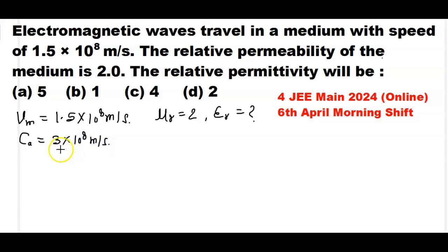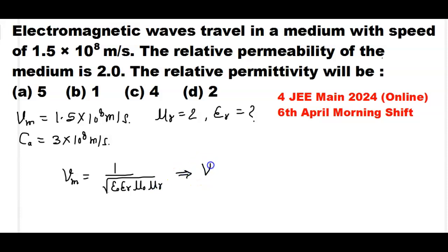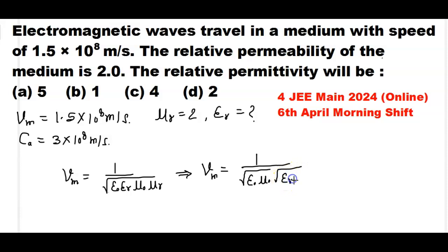We know that the speed of electromagnetic waves in the medium is given by V = 1 / √(ε₀εr × μ₀μr). The velocity of light in the medium equals 1 / √(ε₀μ₀) × 1/√(εr × μr). Since 1/√(ε₀μ₀) gives the speed of light in air, we can simplify.